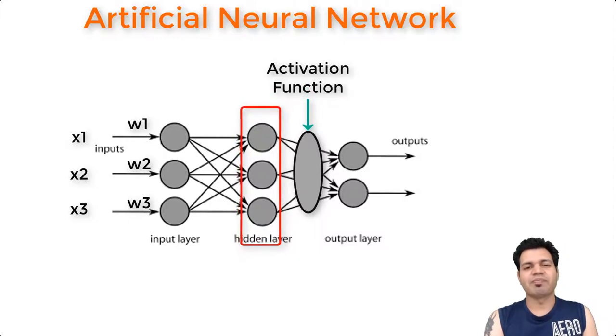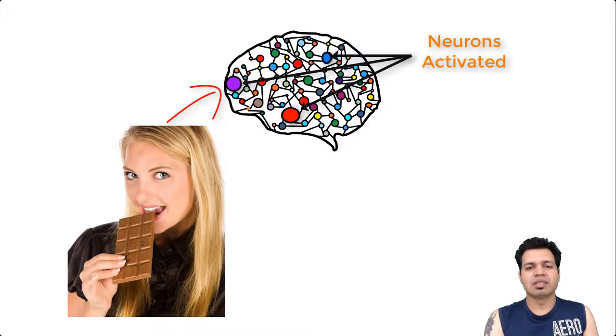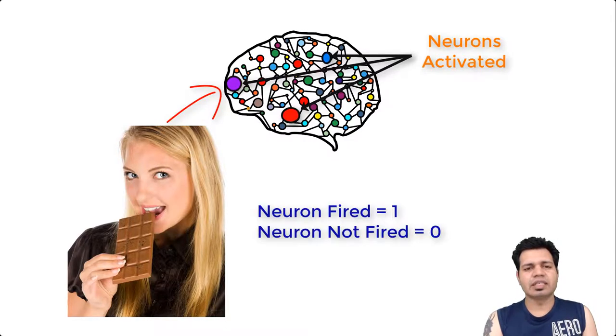Let me now take a real-life example to explain activation functions so it can be understood in a better way. There are people who are very fond of chocolates, so whenever they see or smell chocolates there are few neurons in their brain which get fired or activated. There are also people who don't like broccoli, so whenever they see or smell broccoli a different set of neurons gets fired or activated. In their brain, based on these stimuli, certain neurons get fired and certain other neurons don't get fired at all.